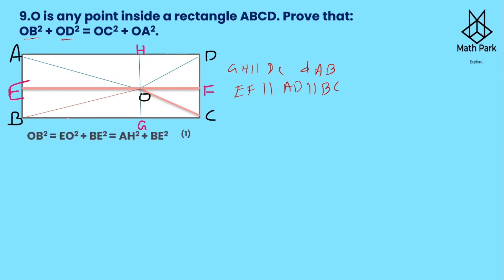Now let us target OB² and OD². For OB², we consider right triangle OEB. OB is the hypotenuse, so OB² = OE² + BE². Since OE = AH (opposite sides of rectangle are equal), we write OB² = AH² + BE². This is equation one.